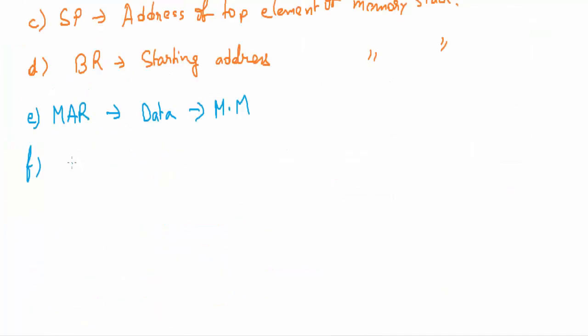Next we have MBR or memory buffer register. It holds the data item that is to be retrieved from the main memory. In main memory we will use the direct register that is located near the processor, so it works very fast.